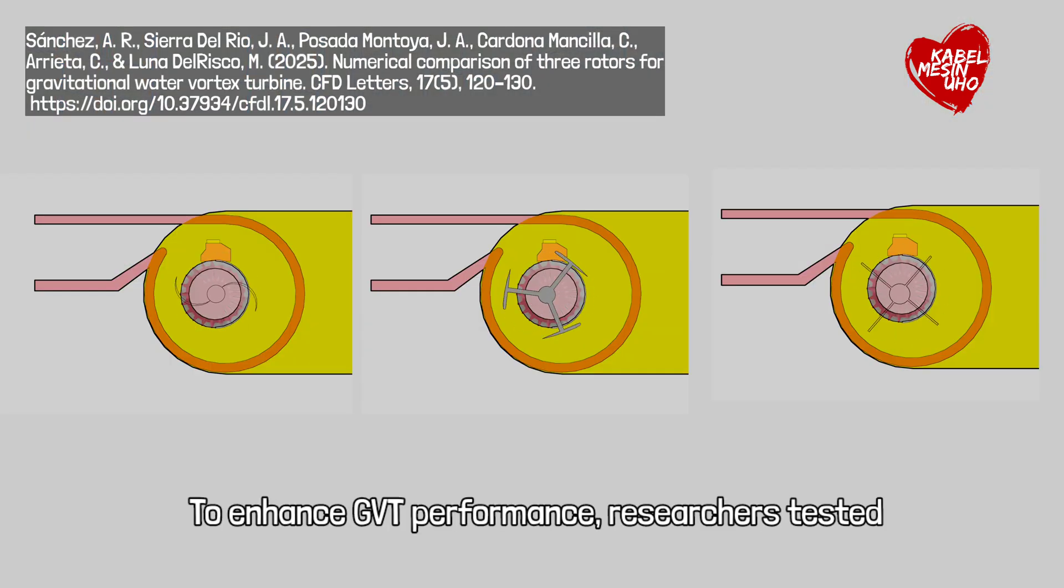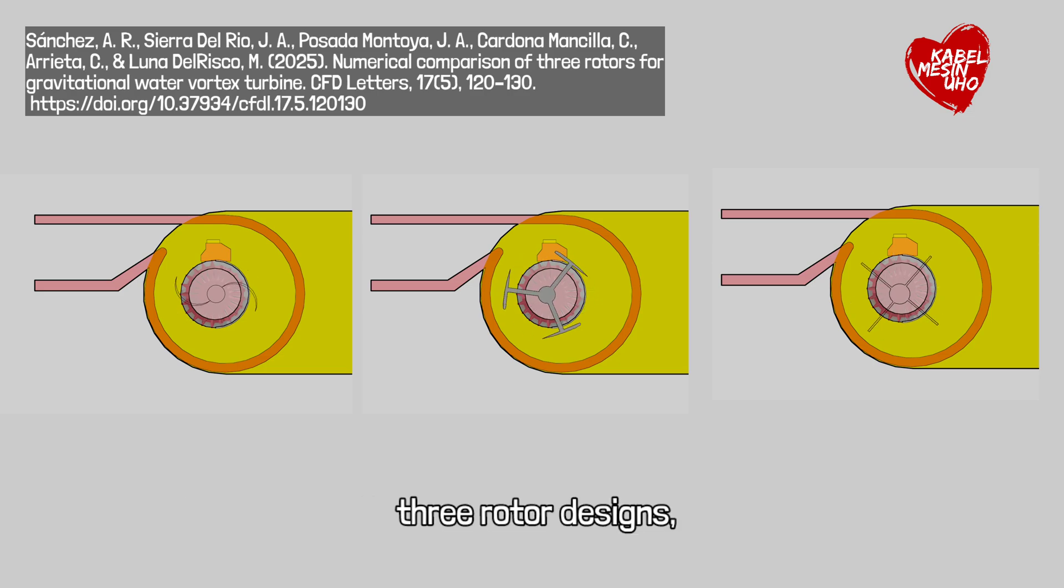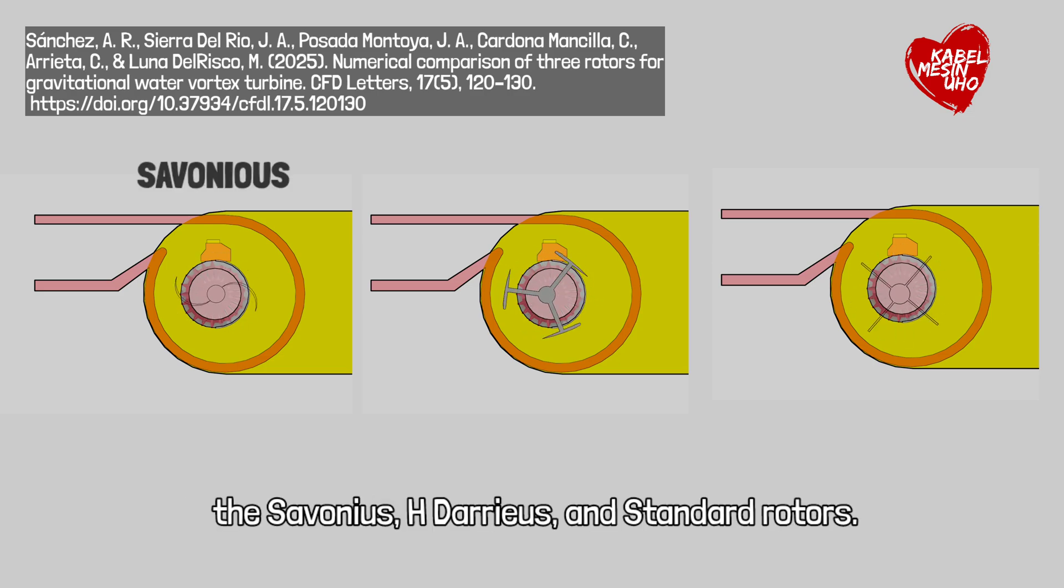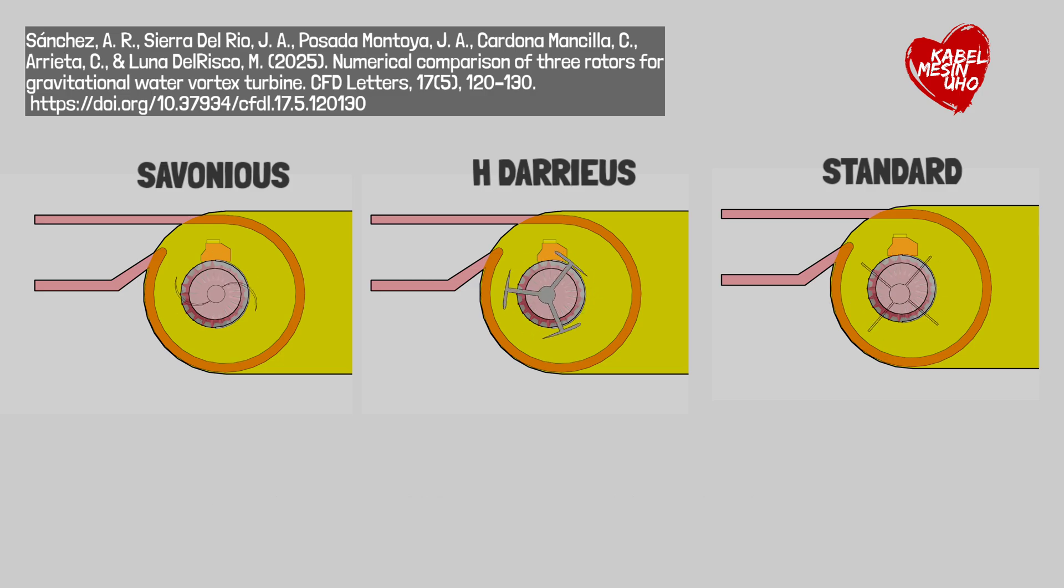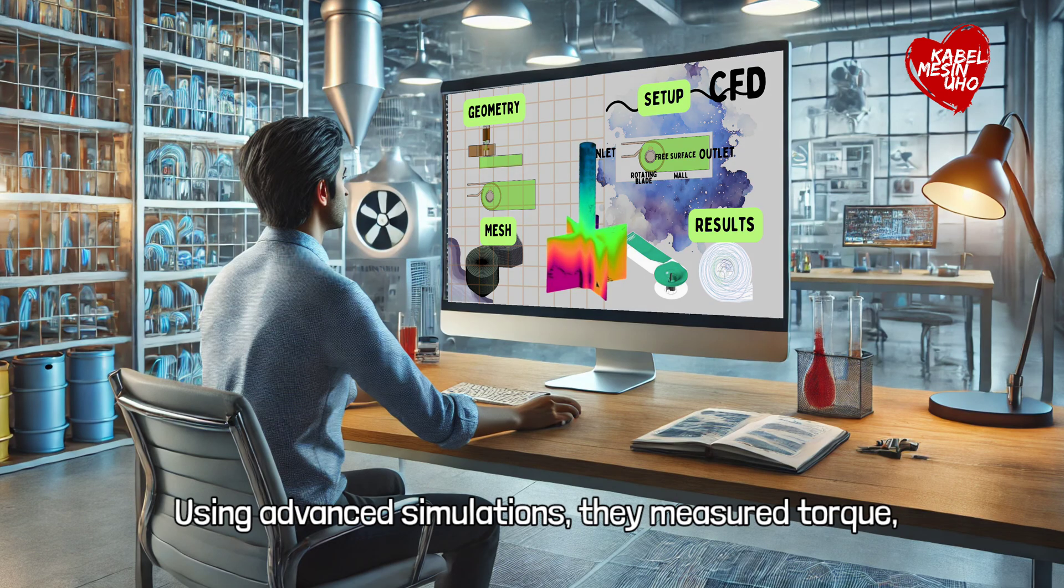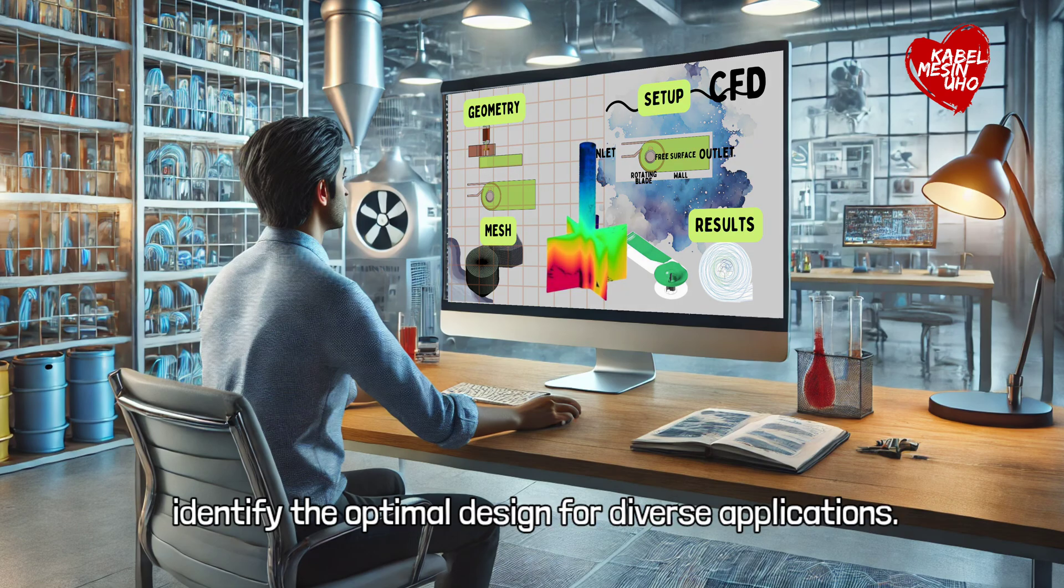To enhance GBT performance, researchers tested three rotor designs: the Savonius, H. Darius, and Standard Rotors. Using advanced simulations, they measured torque, flow dynamics, and pressure distribution, identifying the optimal design for diverse applications.